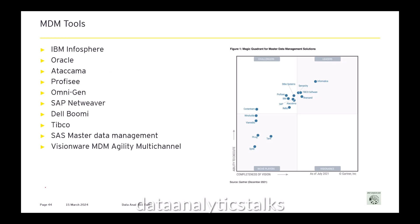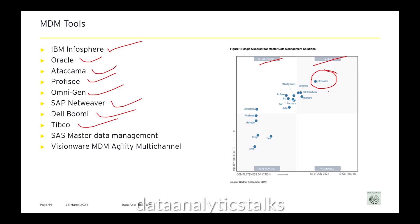Some of the MDM tools available in the market include IBM InfoSphere, Oracle, Ataccama, SAP, Semarchy, Profisee, OmniGen, SAP Data Services, Dell Boomi, Reltio, and so on. According to the Gartner Magic Quadrant for master data management solutions, you can see who the challengers, leaders, niche players, and visionaries are. Informatica seems to be the leader, and challengers include Profisee, IBM, Ataccama, SAP, and others. Please spend some time understanding various tools and features that will really help you excel in this field of data management.